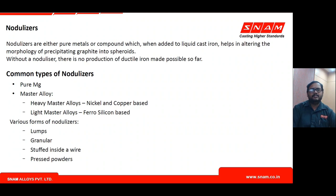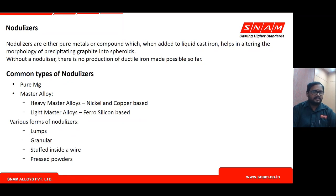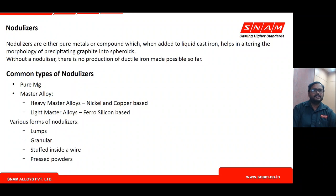All three nodulizing materials are used in different forms in the foundry industry based on process and application. Forms include lumps, granular forms, cold wire technology where the material is injected or plunged into the metal, and pressed powder pellets which are added to the ductile iron treatment ladle.